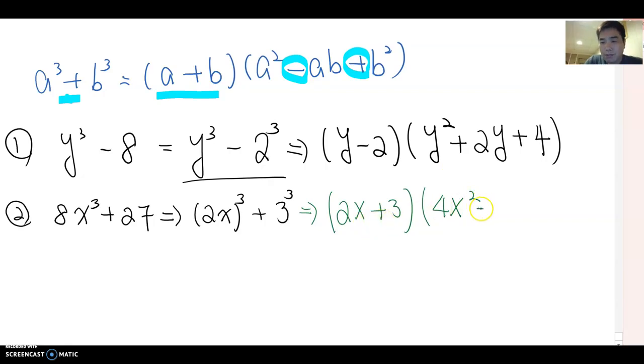Now this starts from plus. Then this term must be minus. And 2x times 3 becomes 6x. And then 3 square becomes 9. That will be the answer for this problem.